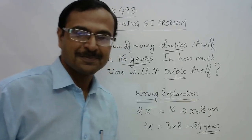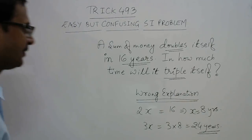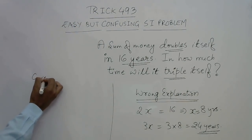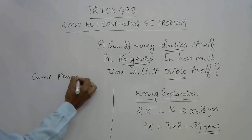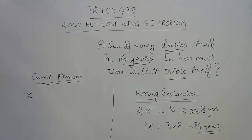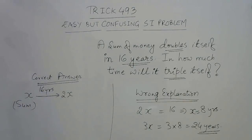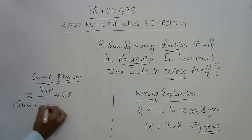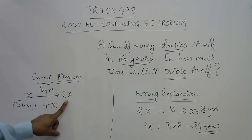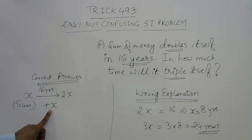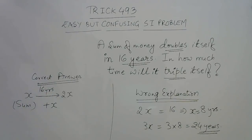And since we need to triple, 3x = 3 × 8 = 24 years. But this is the wrong explanation. Here is the correct one: if you assume the principal amount — the sum of money invested — is x, then it becomes 2x in 16 years. So what is the simple interest? x was already there; the increase is x.